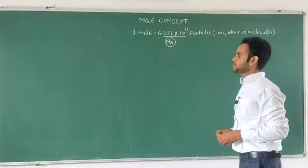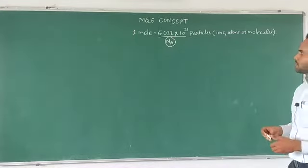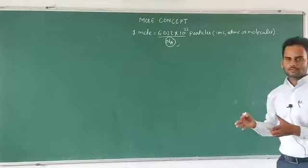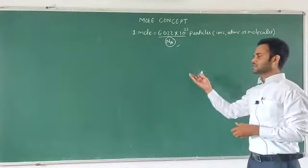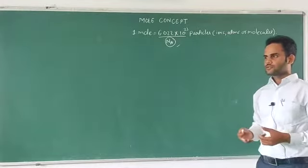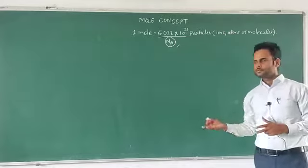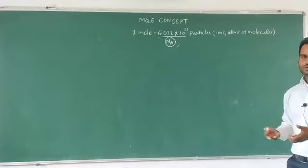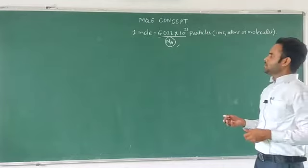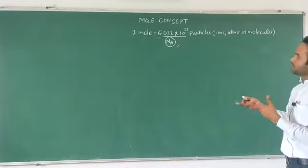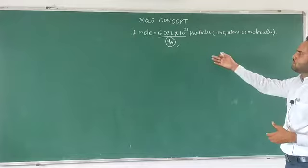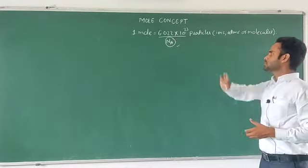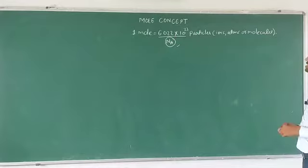It is written as Na. One more thing: 1 dozen is like 12 items. Same like that, in the case of atoms — because they are very small, the molecules and atoms, we cannot even see them with the help of a microscope. That is why we need a measurement unit like this. So 1 mole means 6.022 into 10 to the power 23 particles.